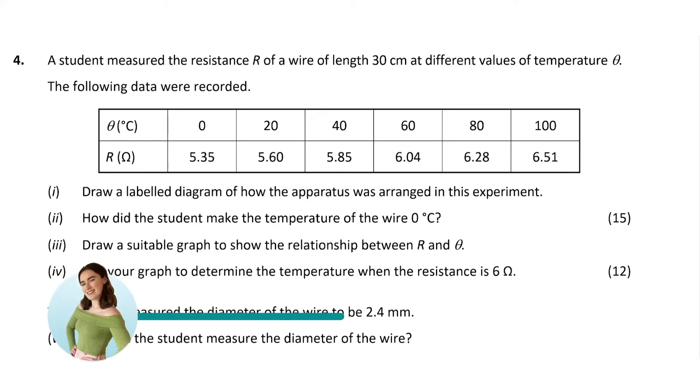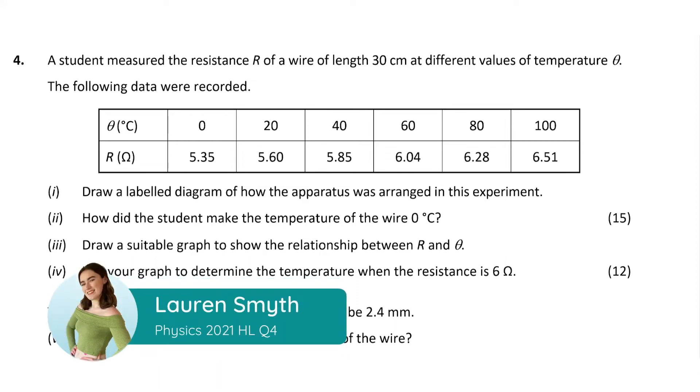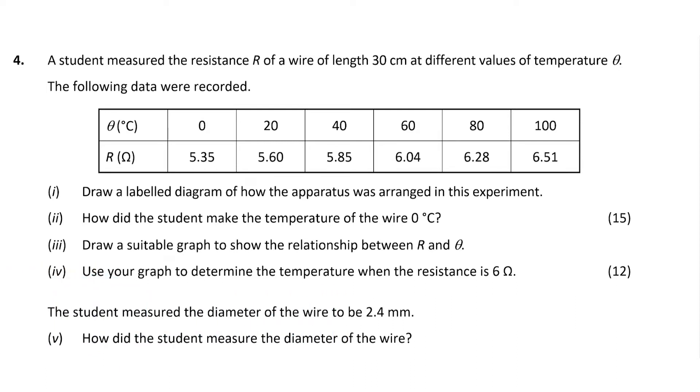Hi guys, welcome to today's video. This is Lauren Smith here, and as a lover of theoretical physics, I'm going to go through the solution to 2021's higher level question 4. This question is on the mandatory experiment to measure the resistivity of the material of a wire and it's worth 40 marks. So we better get into it.